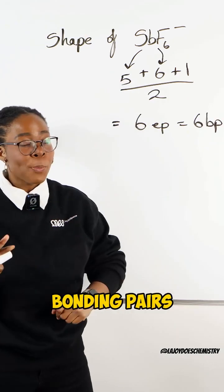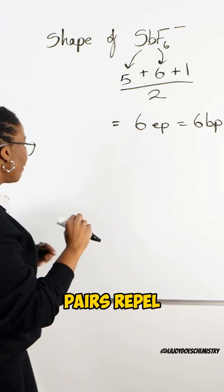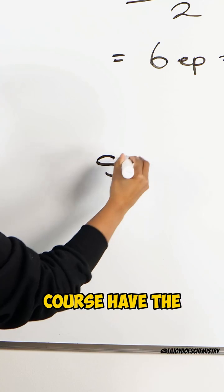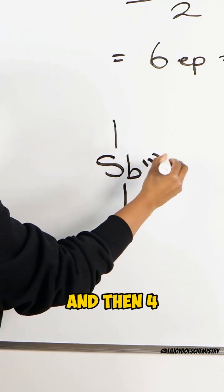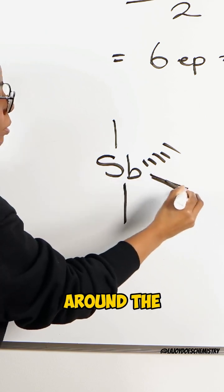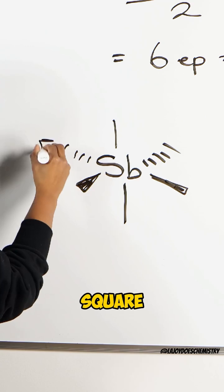When we have 6 bonding pairs, to get those as far away from each other as possible because electron pairs repel, that will of course have the octahedral shape. One up, one down, and then 4 around the middle as a flat square.